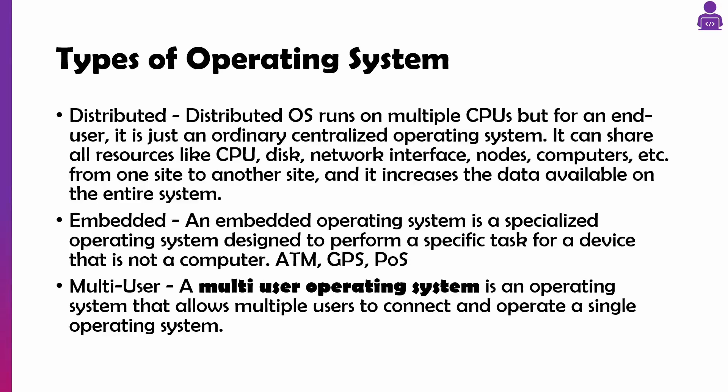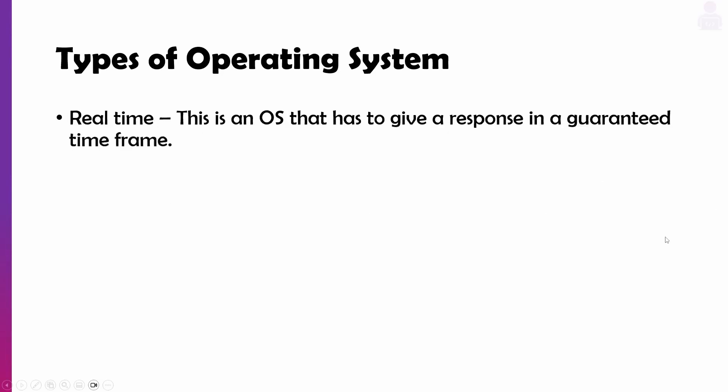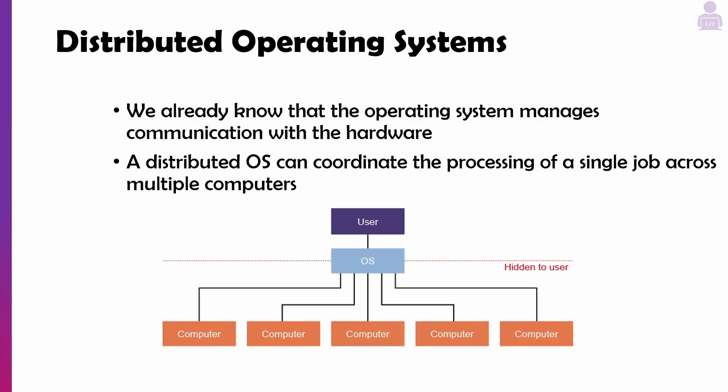A multi-user operating system is where multiple users can connect and operate on a single operating system. We've also got real-time operating systems, where the operating system has to give a response within a guaranteed time frame — for example, in a self-driving car or something in a hospital.